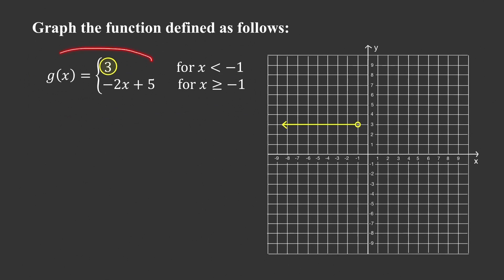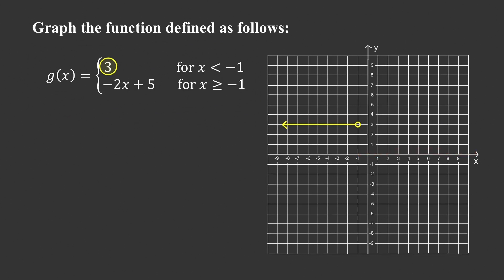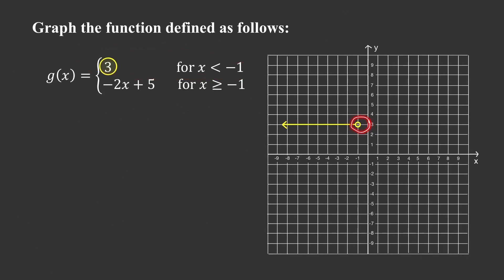To sketch the graph of the first piece, this is a constant function so the graph is a horizontal line. We need to consider the domain on which that formula is defined — only for x less than negative 1. We exclude x values greater than or equal to negative 1, so we use an open dot at x equals negative 1, meaning that point is not part of the graph.